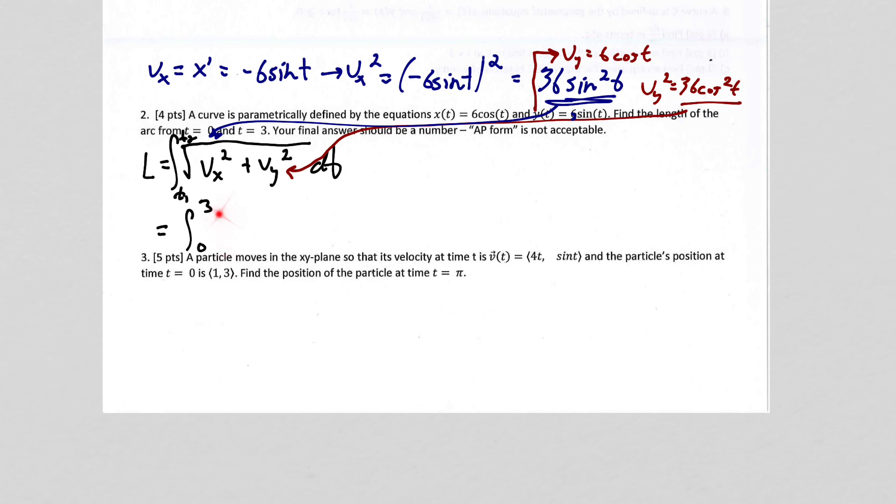Of the square root, using software that I haven't used in a while, square root of, all right, the vx is going to be 36 sine squared t, plus the vy is going to be 36 cosine squared t.